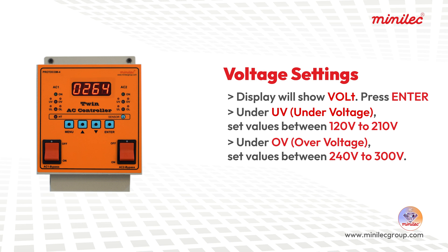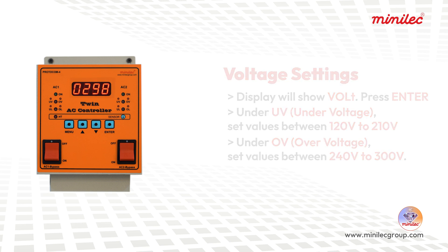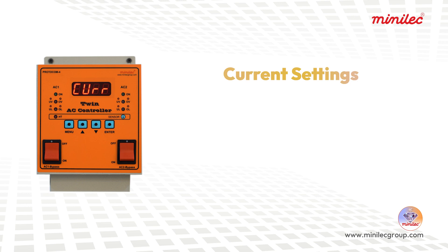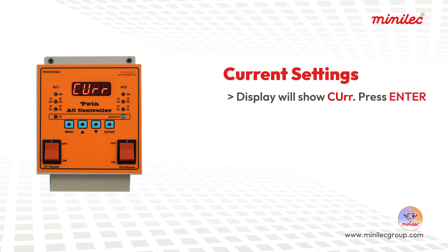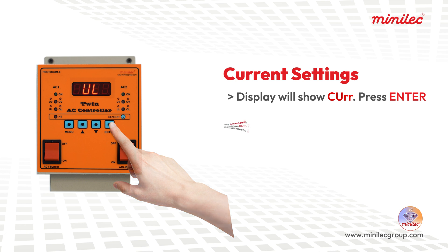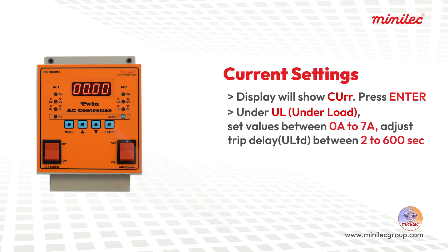Current settings: When the display shows CUR, press ENTER. Under UL (under-load), set values between 0A to 7A and adjust the trip delay between 2 to 600 seconds.